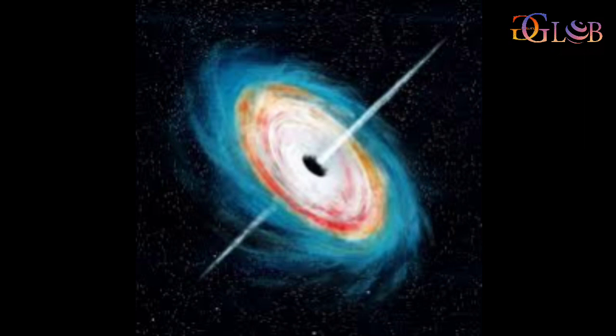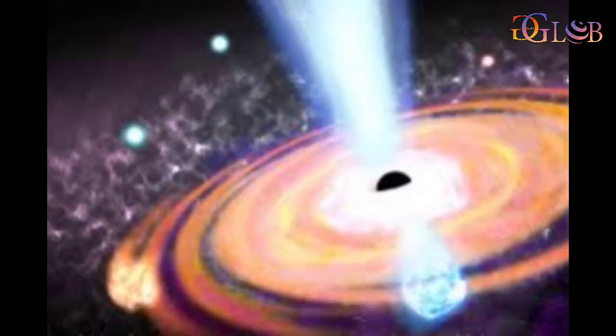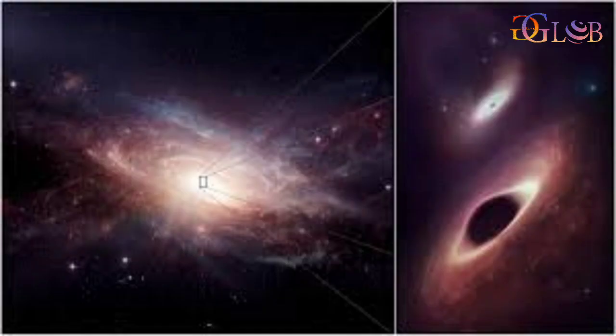Otherwise, it's very hard to understand where these bright galaxies came from because they are typically smaller in the early universe. Why on earth should they be making stars so rapidly?